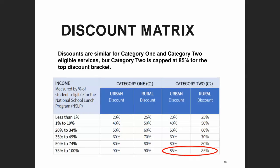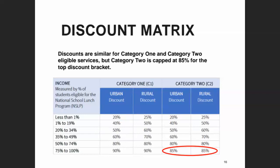Once you have the free and reduced lunch percentage and the rural/urban status, you look at the discount matrix to determine your discount bracket. It is possible to change between brackets from year to year. The highest bracket is 75% to 100% eligible for free and reduced lunch — some libraries teeter around 73 to 75%, going back and forth between an 80% and 85% discount for Category 2. Category 1 discounts go up to 90%; Category 2 caps at 85%.